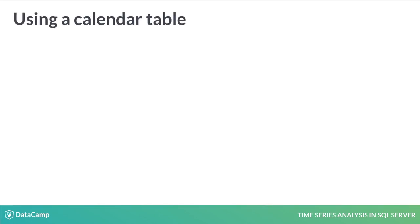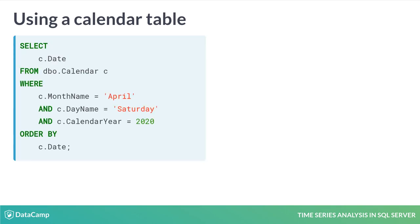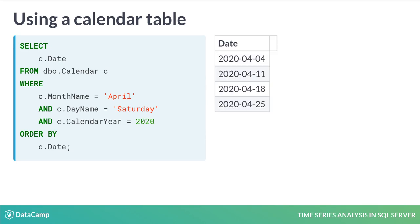The real power here is in how calendar tables simplify queries. Suppose I need to plan an event and it should take place on a Saturday in April 2020. We can write a statement which returns these dates, but it won't be as simple as this query. The results give us back exactly the dates we need. Furthermore, if we want to avoid scheduling our event on the first day of Passover or the day before Easter Sunday, we can do this with our calendar table too.